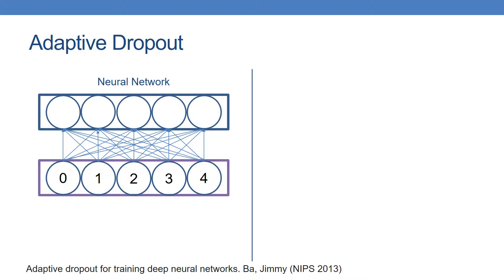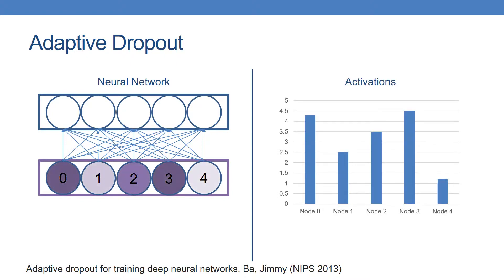Each neuron achieves a certain level of activation for a given input. Adaptive dropout stochastically drops neurons based on the magnitude of its activation.